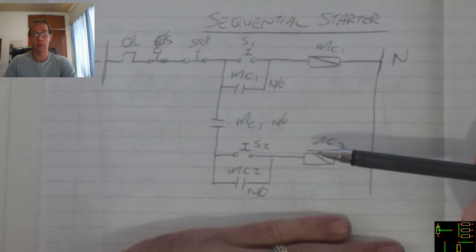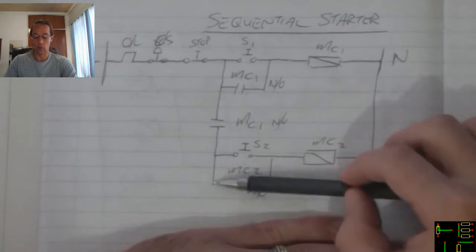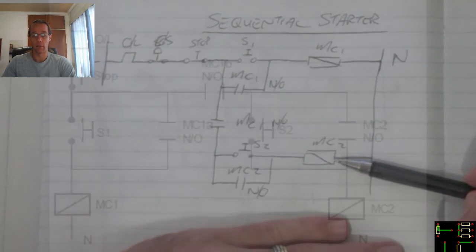This is effective in the sense where we've got multiple conveyors and we need to start the first conveyor before we can start the second conveyor.